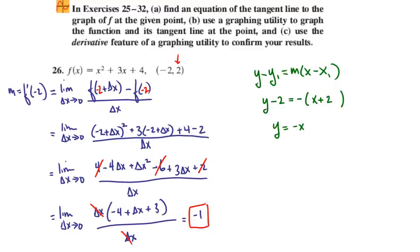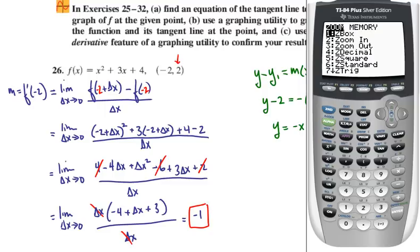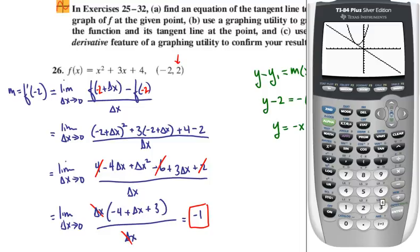We're going to graph these functions. I'm going to put in our quadratic function, x squared plus 3x plus 4, and the line y equals negative x as well. We'll make sure to zoom standard, option 6, and then graph it. You can see that y equals negative x definitely appears to be tangent to the curve when x equals negative 2.